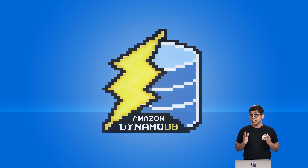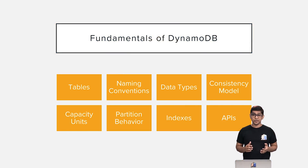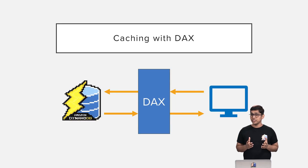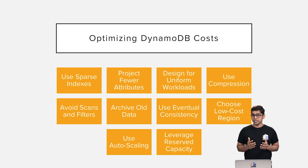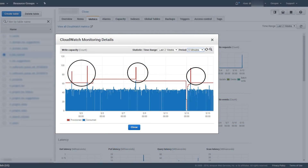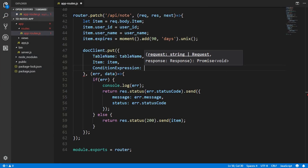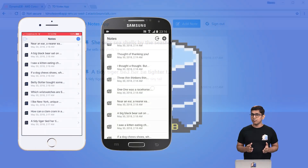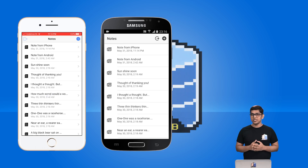Some of the key topics that we'll cover in this course include the fundamentals of DynamoDB and the related concepts, how to design DynamoDB tables using DynamoDB best practices, how to use DAX or DynamoDB Accelerator for faster performance, how to reduce DynamoDB costs, how to perform efficient scaling, and how to use AWS SDK to develop highly scalable web as well as highly scalable mobile applications with DynamoDB as backend.